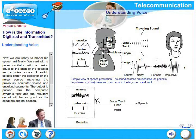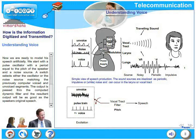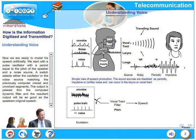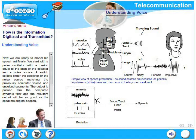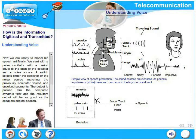We are now ready to model the person's speech artificially. We start with a pulse oscillator with a period equal to the pitch of the speaker, and also a noise source. A switch selects either the oscillator or the noise source, matching the previously computed voiced and unvoiced segments. Wherever voiced segments are detected, the oscillator is deployed; wherever unvoiced segments are detected, a noise source is deployed. The output is passed through the computer dynamic filter, and the resultant output will be as good as the speaker's original speech.